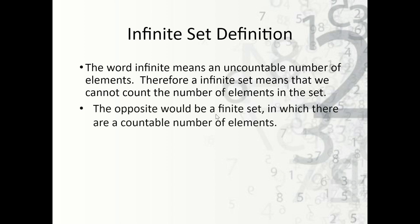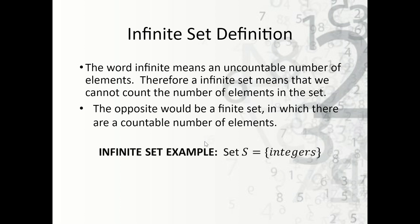The opposite of an infinite set is a finite set, which has a countable number of elements. For example, the natural numbers between 1 and 10 go 1, 2, 3... 10, and then stop — that's a finite set. An example of an infinite set would be the set of integers, since there's no limit to the number of integers we can count.